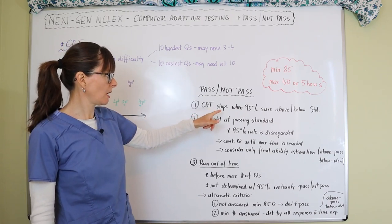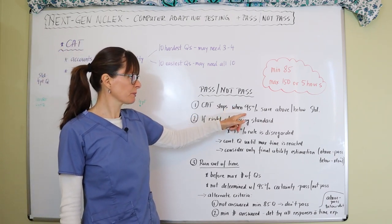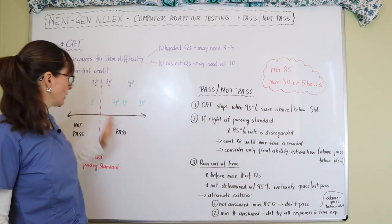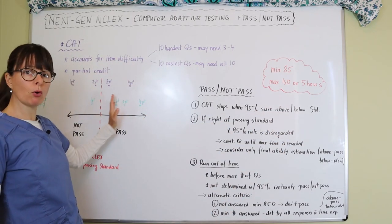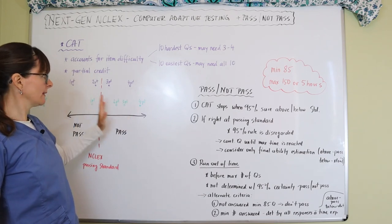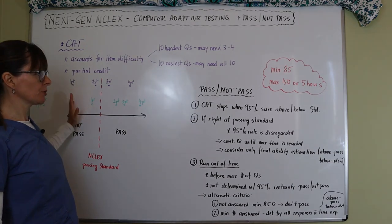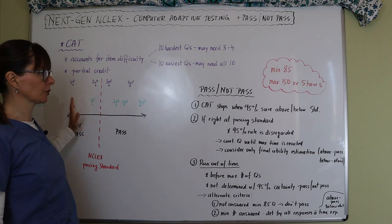The computer adaptive testing stops when it is 95% sure that you're above or below the standard. When you've been above more than below, you're passing. If it's 95% sure you're below the standard, you're not going to pass.